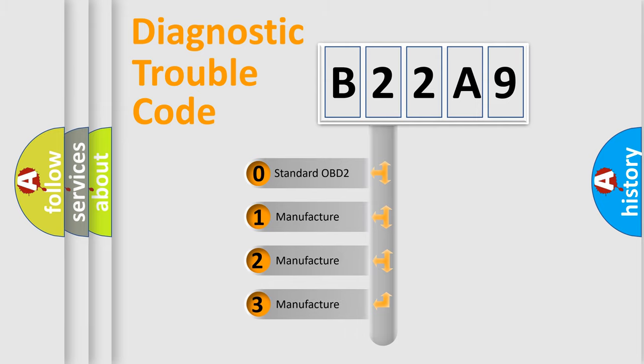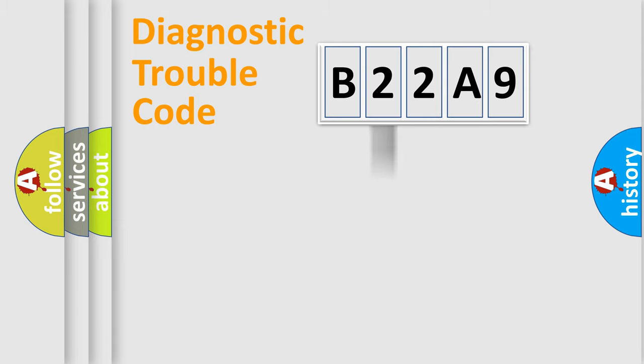If the second character is expressed as zero, it is a standardized error. In the case of numbers 1, 2, or 3, it is a manufacturer-specific expression of the car-specific error.